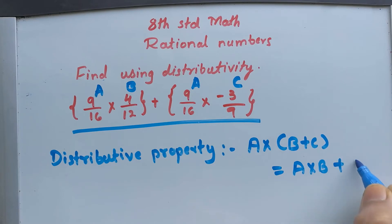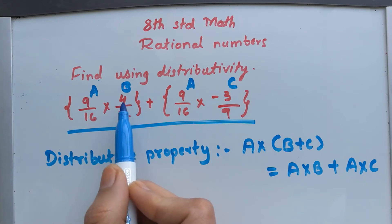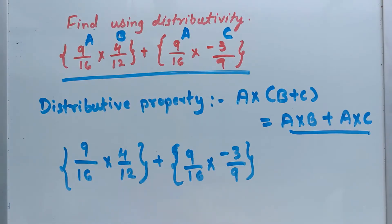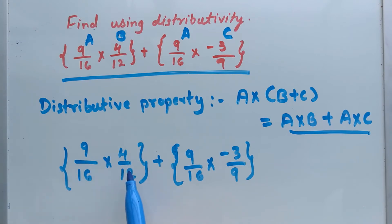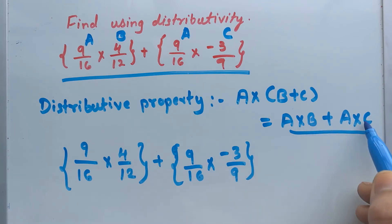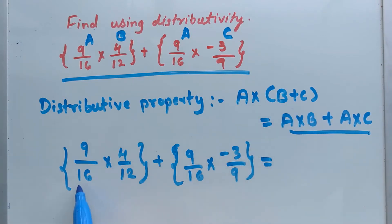Now look at our question: this is a multiplied by b, plus a multiplied by c. So a multiplied by b plus a multiplied by c can be rewritten as a multiplied by (b plus c). Here, a is 9 divided by 16, multiplied by b plus c.